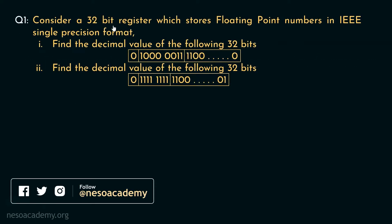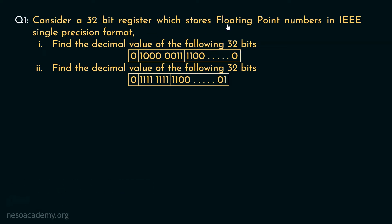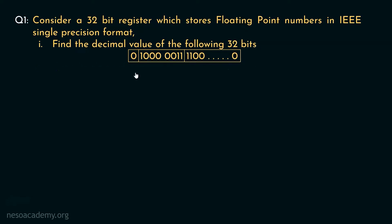Consider a 32-bit register which stores floating point numbers in IEEE single precision format. In case of IEEE single precision, which is named as binary 32, we need a 32-bit register to store floating point numbers. We are to find the decimal value of two given 32-bit patterns. In the first pattern, the sign bit is 0, the exponent field has the bit sequence 10000011, and the mantissa has two 1s at the beginning with the rest filled with zeros.